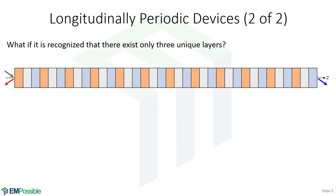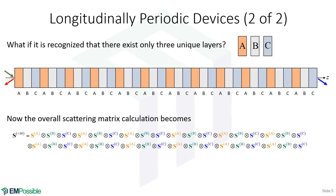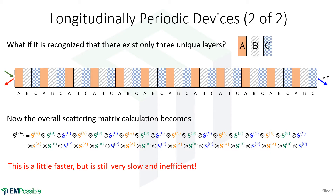If we stare at this long enough, we recognize there are only three unique layers — let's call them A, B, and C. This suggests a more efficient approach: just calculate a scattering matrix for A, a scattering matrix for B, and a scattering matrix for C, then combine them with the Redheffer star product. This is a bit better, but still very slow and inefficient, because those Redheffer star products are not fast.